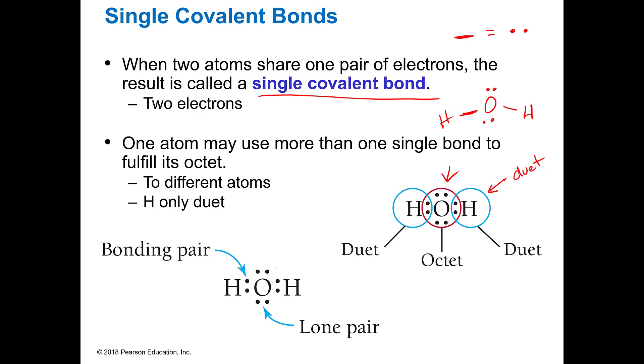Oxygen thinks that it has eight because there are eight surrounding it. Whereas each hydrogen thinks it has its duet, it's two. So everybody's happy, and everybody has a filled shell.